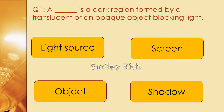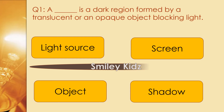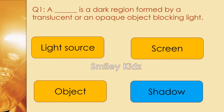Question number 1. A dash is a dark region formed by a translucent or an opaque object blocking light. Options are light source, screen, object, and shadow. The right answer is shadow. A shadow is a dark region formed by a translucent or an opaque object blocking light.